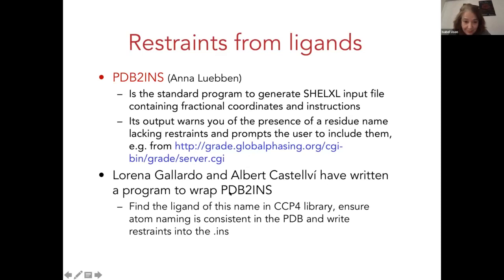Going back to where we started — validation and the prompt from Gerard Bricogne: can we do something more, can we look at other things beyond just assessing the model? We are looking into verification, for instance probing for ligands whether the data are good enough to discriminate among sensible alternatives, because you find things like — in carefully calculated maps — PEGs that end up being a fatty acid. It's happened to us as well in our own structures.